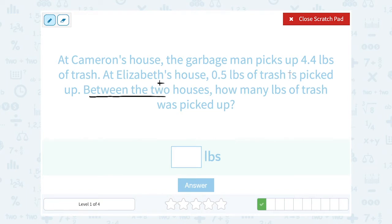So we had 4.4 and we're going to add 0.5. Now I'm going to add the digits in each place. So I need to make sure that my decimals are lined up so I have my place values correctly lined up. This would be my tenths place and this would be my ones place. So in the tenths place, 4 plus 5 gives me 9. And in the ones place, 4 plus 0 is 4. So that means all together, 4.9 pounds of trash were picked up for the two houses.